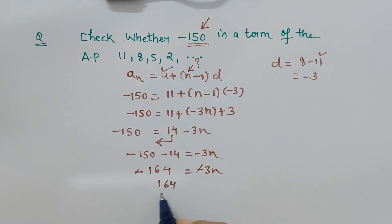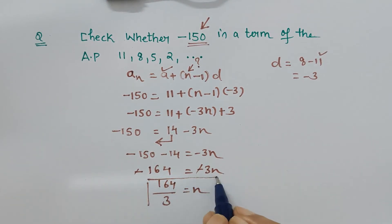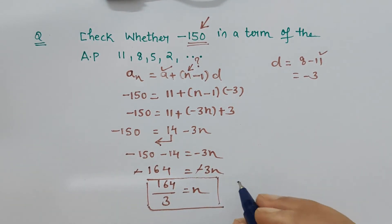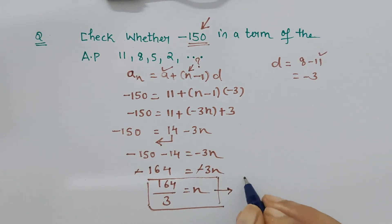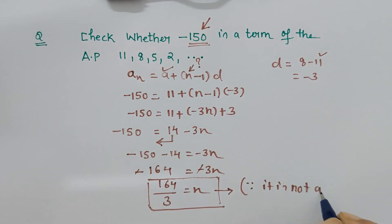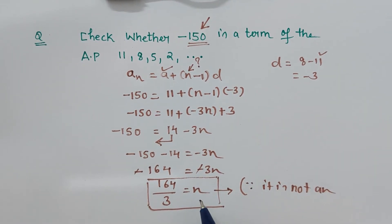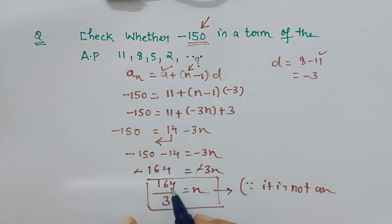Now since n is not an integer value, because any term has to be an integer. It should be first term, second term, third term, right? So it is in fraction form, so it is not an integer.